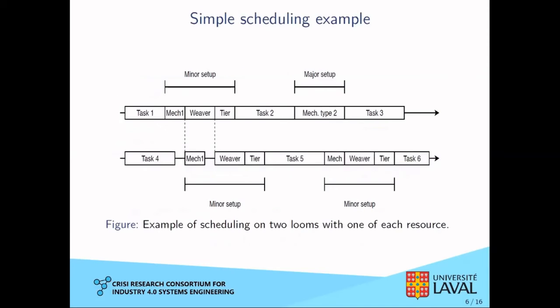Here is a simple example of a schedule with two looms. In this example, there is one employee of each profession. Each timeline represents a loom, and each rectangle represents a setup or a task. At the beginning of the timeline, we see two mechanics overlapping on different looms. Since there aren't enough employees to do both tasks at the same time, we have to delay the second task. The same thing happens for bigger problems when we run out of resources.